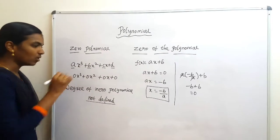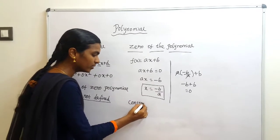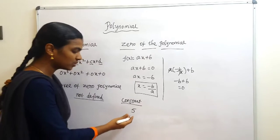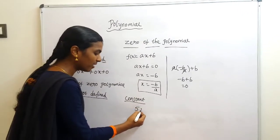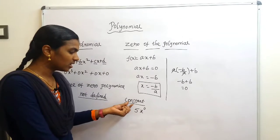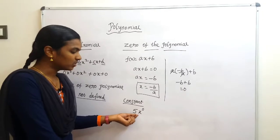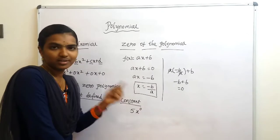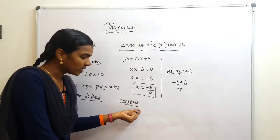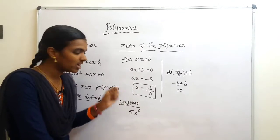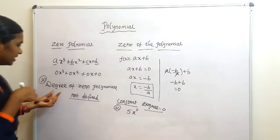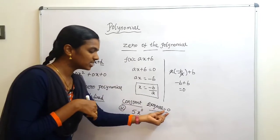Now, how do we find the degree of a constant polynomial? A constant is a numerical value — for example, the number 5. We can write 5 as 5 × x⁰, and this doesn't change the value because x⁰ = 1, so 1 × 5 = 5. The constant polynomial has only one power, which is 0. Therefore, the degree of the constant polynomial is 0. So: degree of the zero polynomial is not defined, and degree of the constant polynomial is always 0.